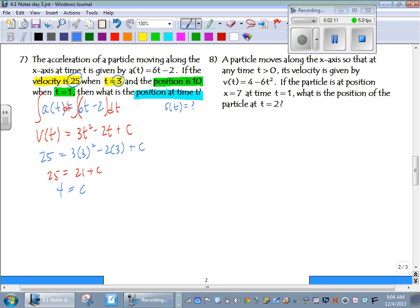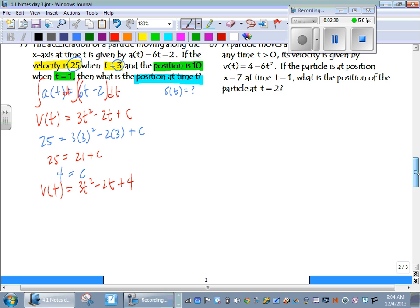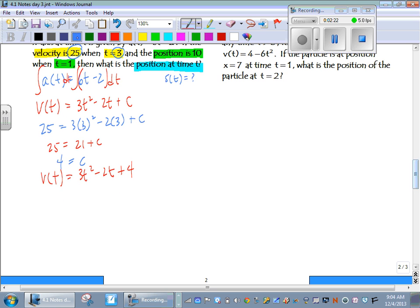So that gives us our equation for velocity. V of t equals 3t squared minus 2t plus 4. But we're asked to find the position equation, so we have to do the antiderivative of velocity to get position.